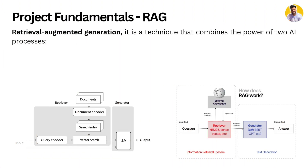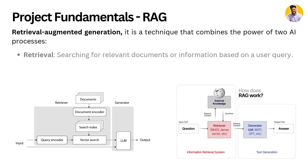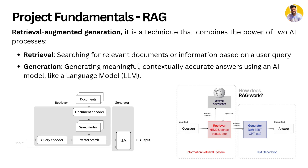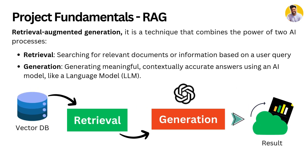Before we dive into the code, let me give you a brief about what RAG is. Retrieval Augmented Generation is a technique that combines two AI processes. First is retrieval — you search for relevant documents or context based on the user query. Then there is generation — that relevant context is used alongside the user query to generate a meaningful, contextually accurate answer using the large language model.